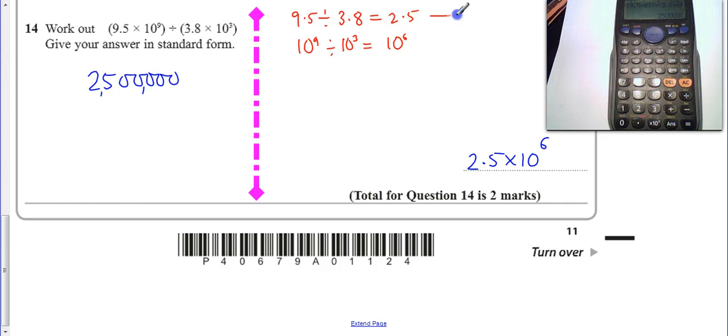Sometimes you'll find that this number here will need to be moved between 1 and 10. So, you might have to change this number, multiply or divide it by 10 or 100 or 1000, and then you have to change this one properly. In this case, it works out fine, so you can just put it straight into standard form.